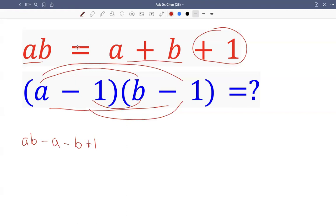So now from this one, we see AB minus A minus B equals one.